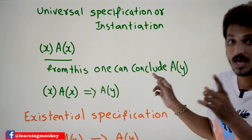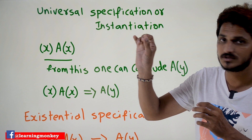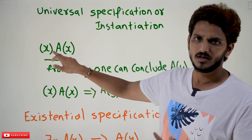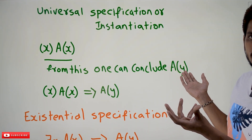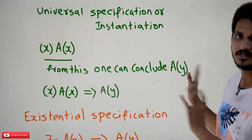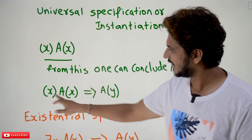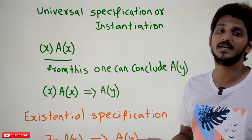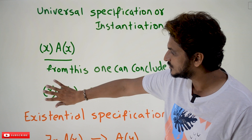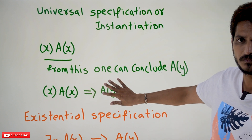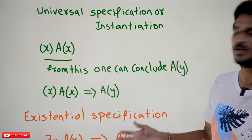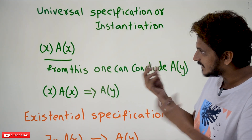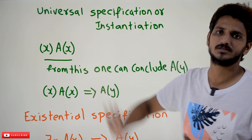Y is a free variable here. In our last class we discussed free variables — we assign a free variable to a single subject. If A(x) is true for all subjects (all persons, animals, or things), then you can conclude it is true for a single subject, A(y). This can be written as: for all x, A(x) tautologically implies A(y). If for all x this is true, then you can conclude A(y) is going to be true, where y is one subject from the entire list of subjects.